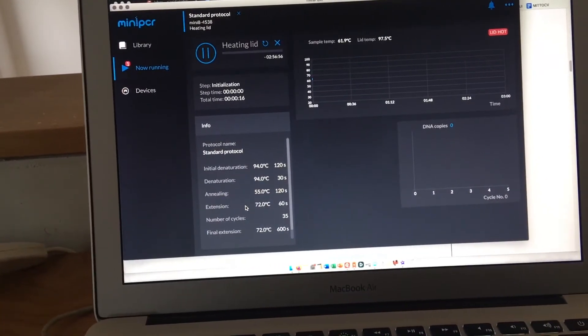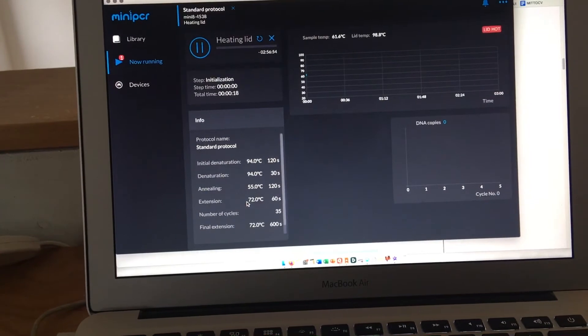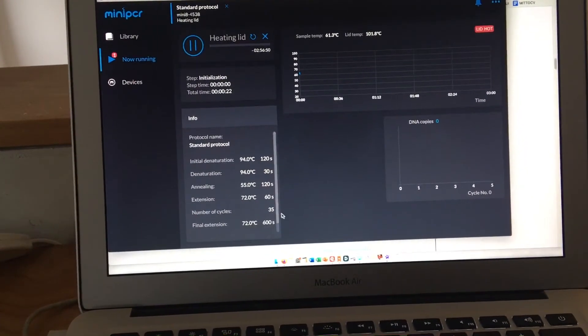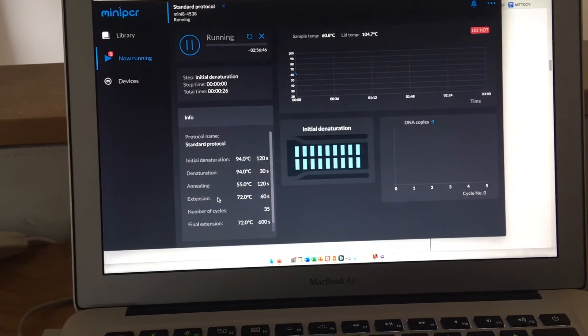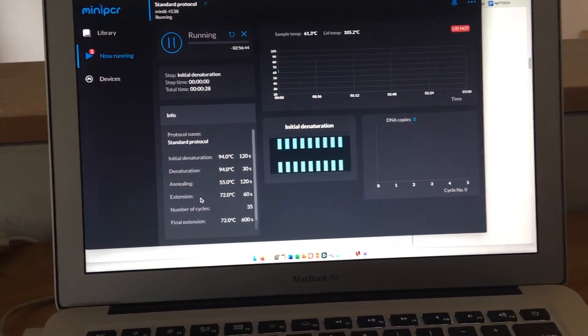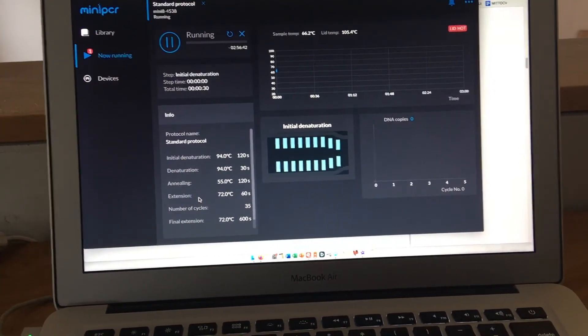And then extension is when they get amplified, i.e., you double them every cycle. There's 35 cycles, the number of DNA gets doubled, so you're going to end up with billions and billions of DNA that we can then send off to the lab.